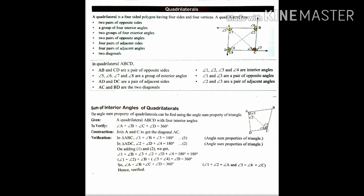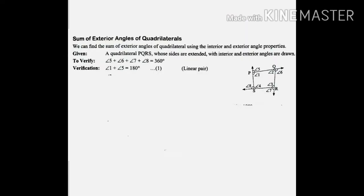To verify the angle sum property of the quadrilateral: angle A + angle B + angle C + angle D must equal 360 degrees. If we divide the quadrilateral into two triangles and use the angle sum property of triangles, adding the measurements of the two triangles gives the angle sum property of the quadrilateral, which is 360 degrees.